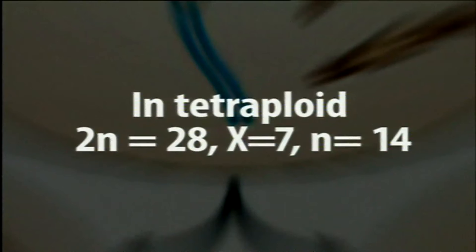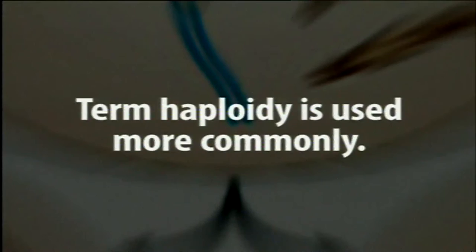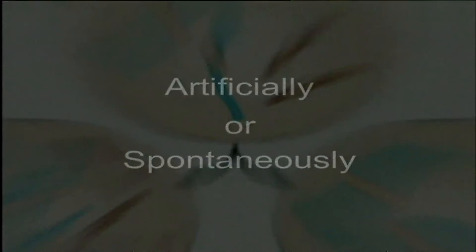However, in a tetraploid condition with 2n = 28, x remains the same (x = 7), whereas the haploid or n condition changes to 14. So n will change based on the level of ploidy — triploids, tetraploids, or hexaploids have different n conditions, whereas x, the basic number, remains the same for a particular species. Since most organisms are diploids and haploids of diploids have the same chromosomal constitution, the term haploidy is more commonly used than monoploidy.